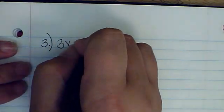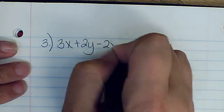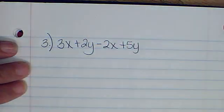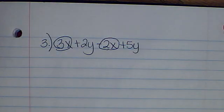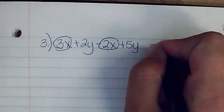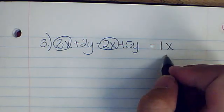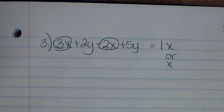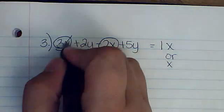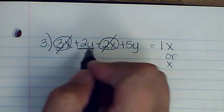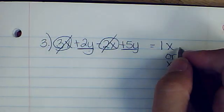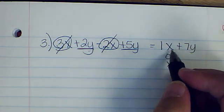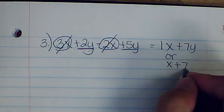Number three is 3x plus 2y minus 2x plus 5y. Starting with x's: 3x minus 2x gives us 1x, or just x. Then the y's: 2y plus 5y makes 7y. So the answer is x plus 7y.